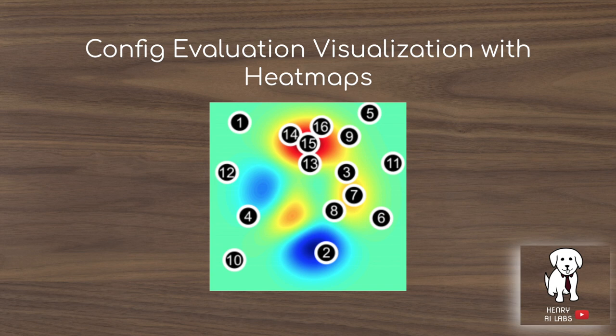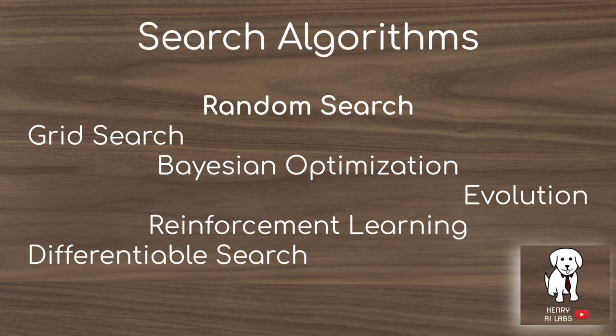One useful visualization is to construct heat maps with the hyperparameters explored, where the red regions correspond to high classification performance and the blue regions correspond to really poor classification performance. These are some of the search algorithms used to search in discrete search spaces that make up deep neural networks.